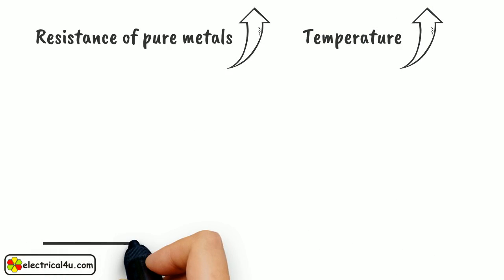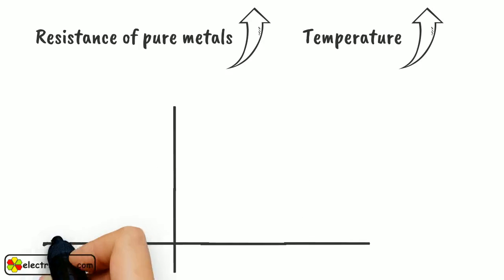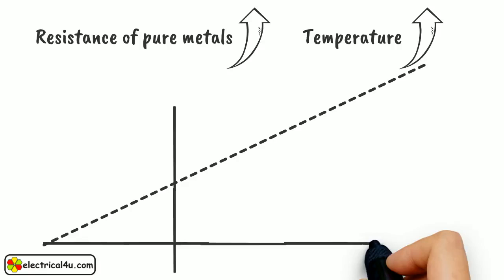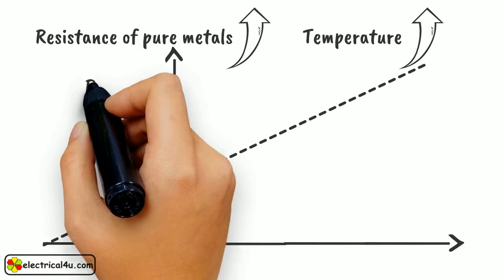For metallic conductors, this variation of resistance with temperature is linear. The variation of resistance with change in temperature is shown here as a line.